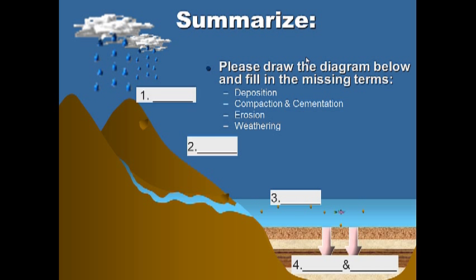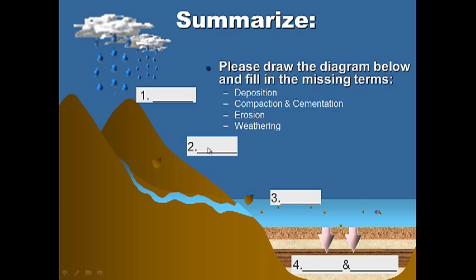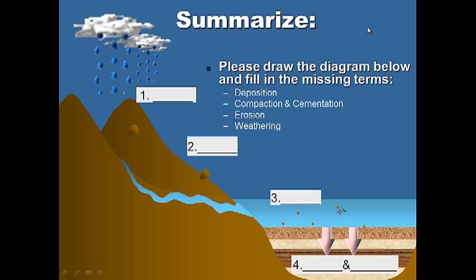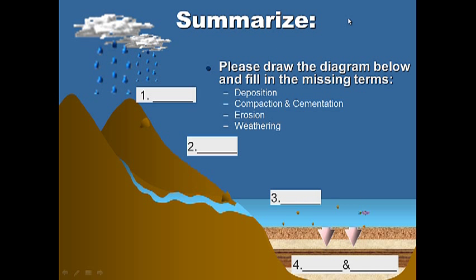For 20 easy points, draw this diagram: What is happening at step one? What is happening at step two? What is happening at step three? What is happening at step four? Draw it and fill in the terms — you will receive no credit for just drawing it without the terms. Congratulations, you're done with day two of the rock notes. Have a great evening, pause it, and good night.